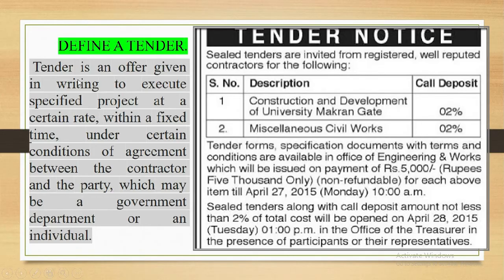Next, tender. Tender is an offer given inviting to execute a specified project at a certain date within fixed time under certain conditions of agreement between the contractor and the party, between the owner and the contractor, which may be a government department or an individual. Actually a tender is a notice which is provided by a client of the project to different contractors, and then contractors bid on that tender, and then at the end client selects a contractor on which he will rely.